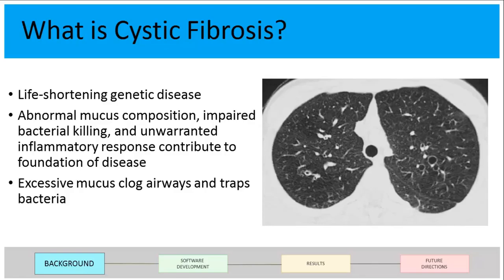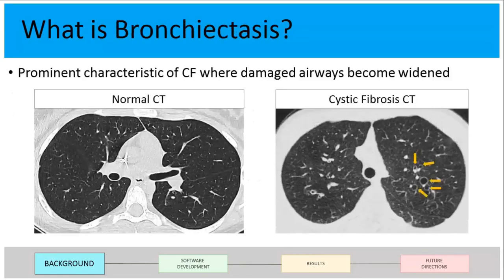In the lungs, mucus clogs the airways and bacteria gets trapped, which infects the airways and decreases their elasticity. When you breathe in, your airways should expand, and when you exhale they should go back to a smaller size. In cystic fibrosis patients, that return to smaller size doesn't happen, so airways stay widened and damaged. This widening of affected airways is known as bronchiectasis and it's a prominent characteristic of cystic fibrosis.